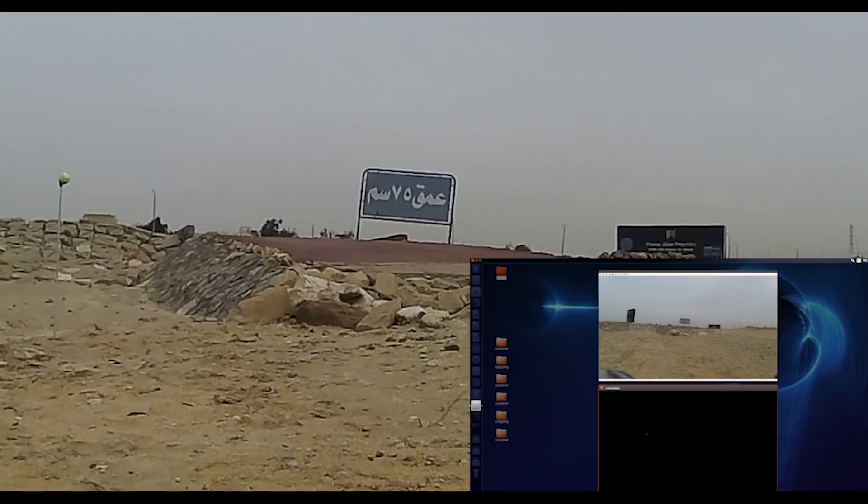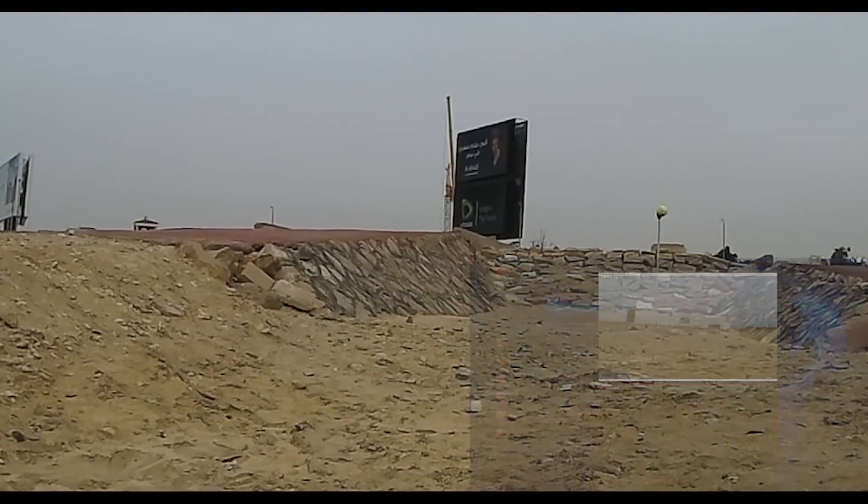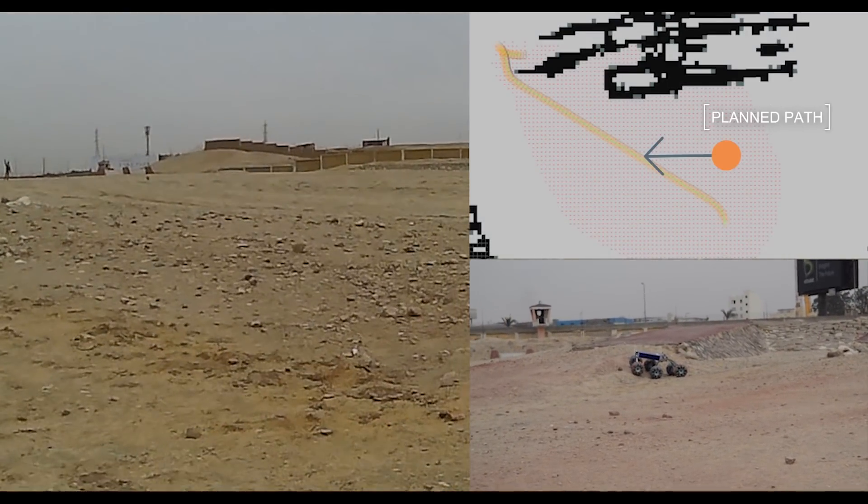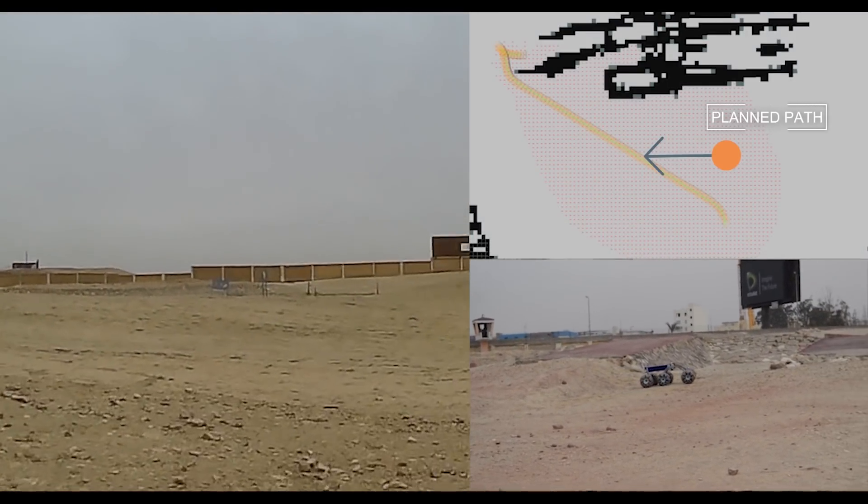After arrival at the target location, image processing is further used to find the gate indicator and approach it. The rover's power levels are monitored throughout the operation to avoid any unplanned behavior.